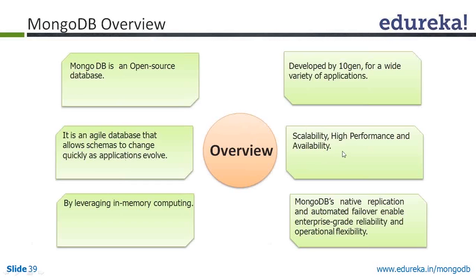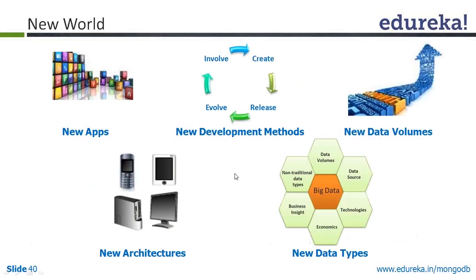MongoDB provides high scalability and high availability. It leverages in-memory computing, which is a very important point, and gives you faster results. MongoDB also provides native replication and automated failover, which gives you more reliability and operational flexibility.